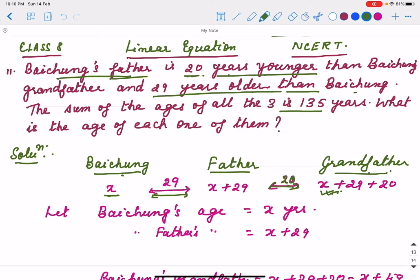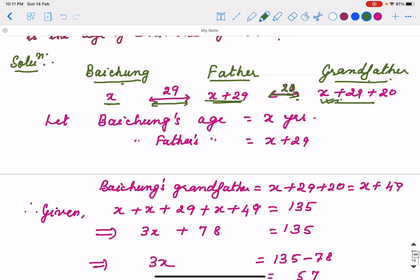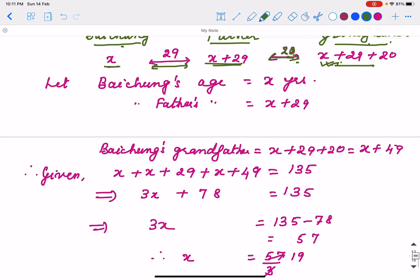Suppose Baichung's age is x. Then father is x plus 29. And father's age if you add 20 years that will be grandfather's age. And all these ages if you add, total is 135.